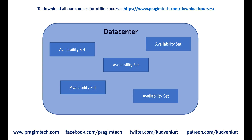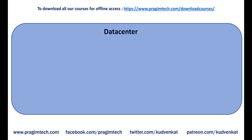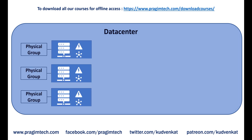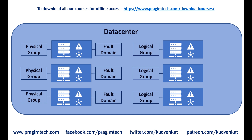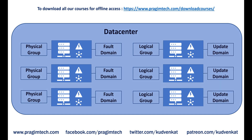Availability set is a concept within a data center. The servers in a data center are divided into multiple physical and logical groups. The physical grouping is called fault domain and the logical grouping is called update domain. You can think of each rack of servers with its own power supply and network switch as one fault domain. So if there are 10 racks of servers in a data center, it's like you have 10 different fault domains.